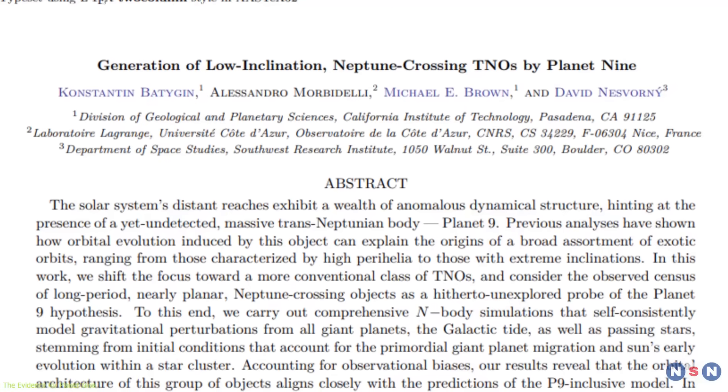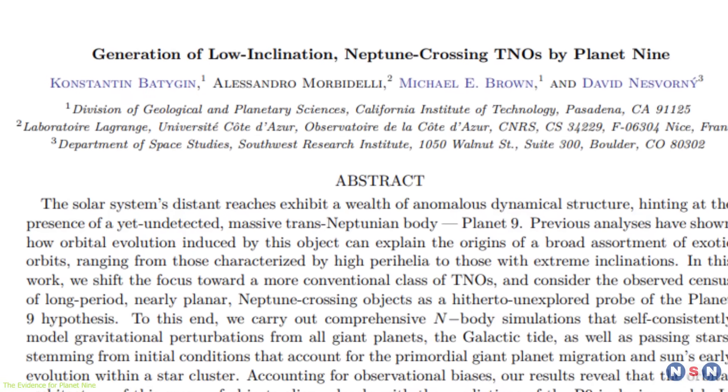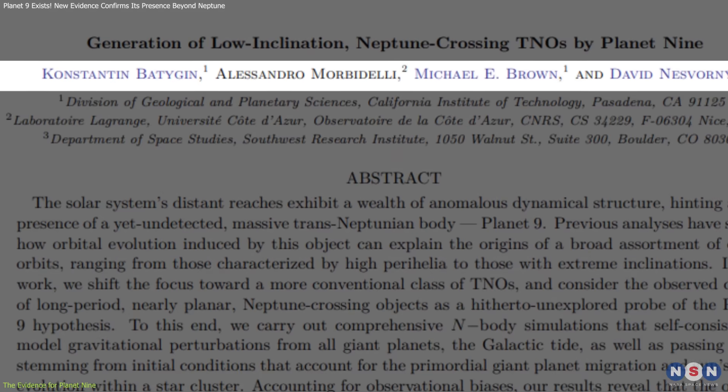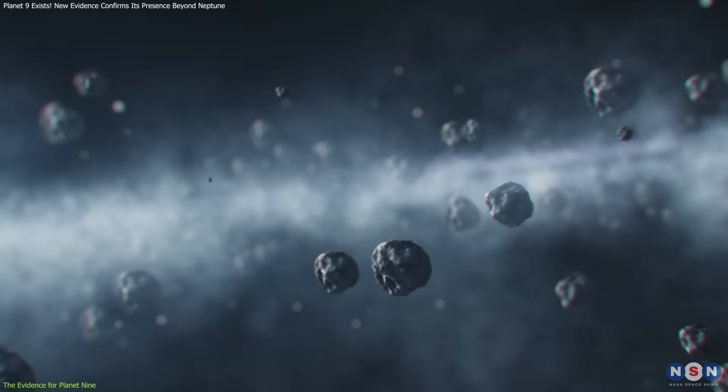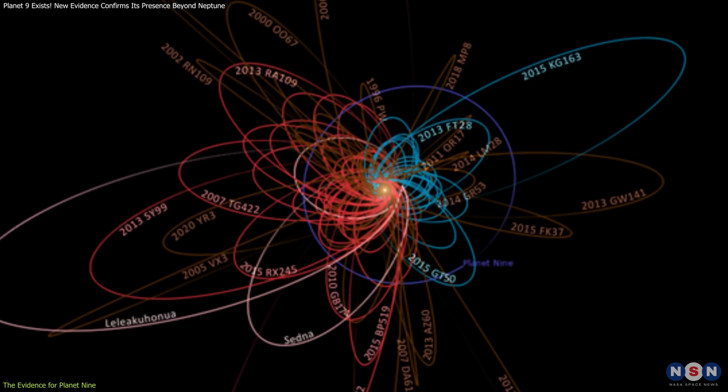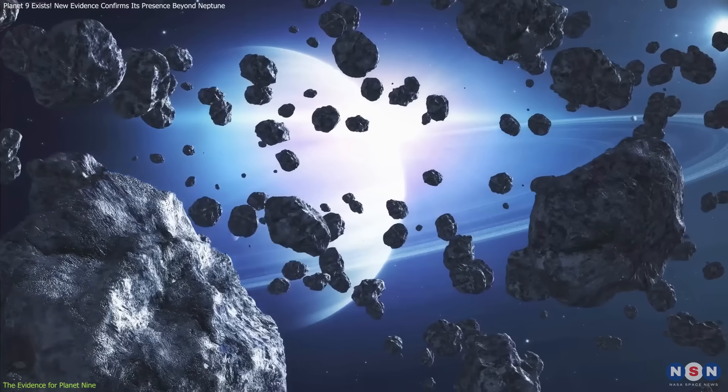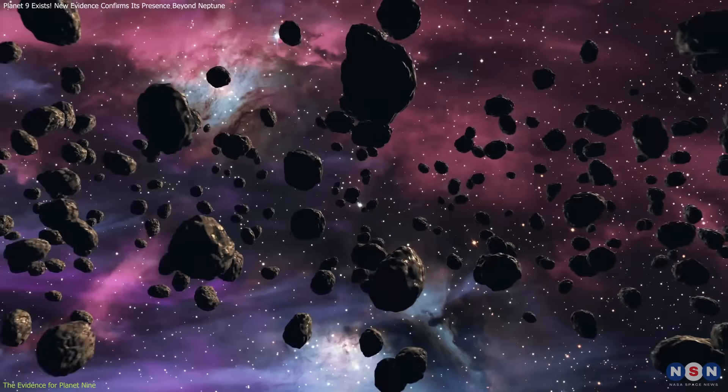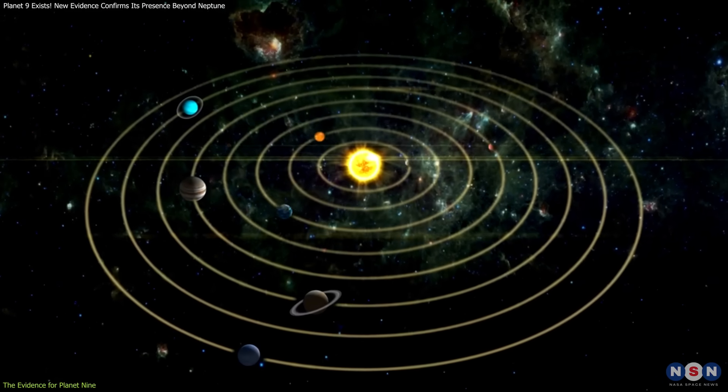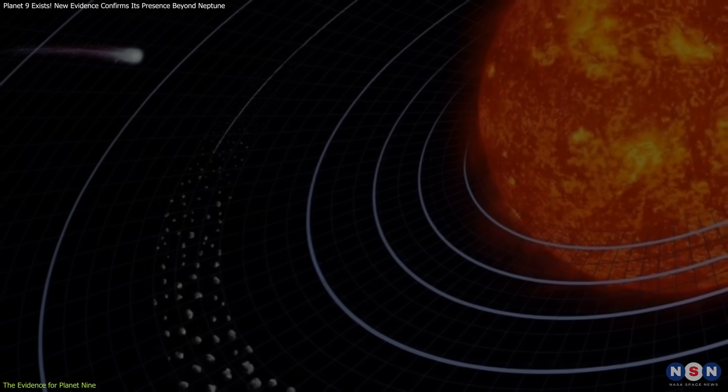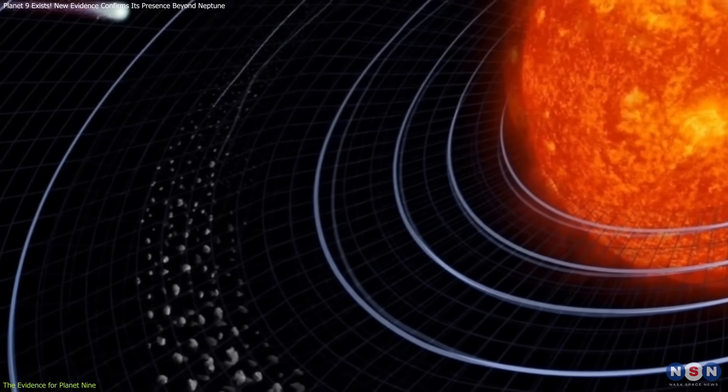Back in 2016, Caltech astronomers Konstantin Batygin and Michael Brown observed that several of these TNOs shared similar orbital characteristics. These TNOs follow elongated orbits that bring them unusually close to Neptune, then send them back into the outer reaches of the solar system. If we think of the solar system as a giant disk, these objects aren't just staying neatly within that plane.